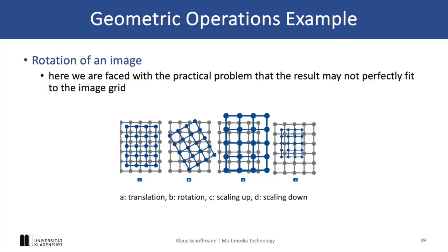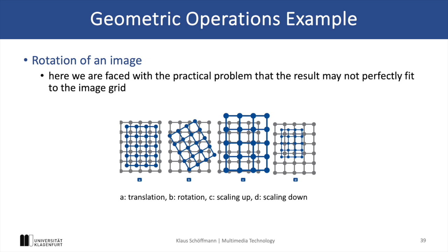Geometric operations modify the spatial arrangement of an image through transformations such as translation, rotation, scaling, and morphing. It is important to understand that these transformations are usually irreversible and depend on pixel neighborhoods. For example, if you rotate an image by 40 degrees and rotate it back later, there will be some lost information that cannot be recovered. A common challenge with geometric operations is aligning the resulting image correctly with the pixel grid, which is often not fully possible, as shown in the example on the slide.